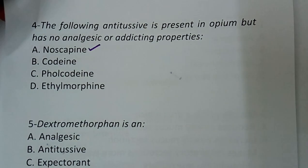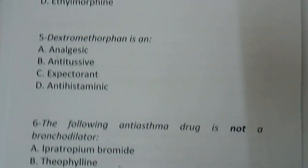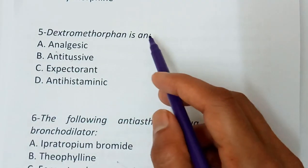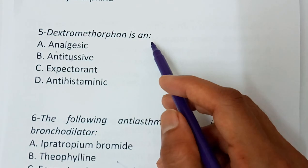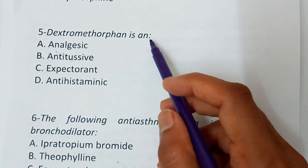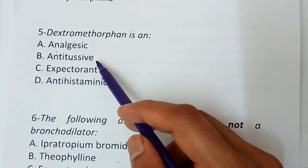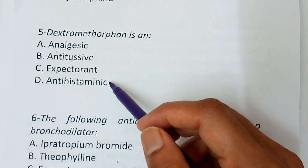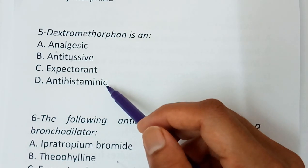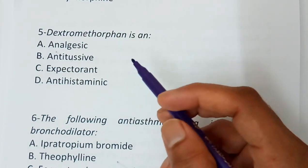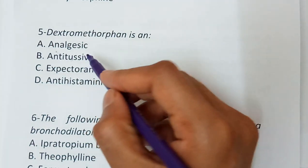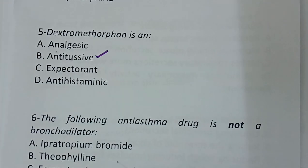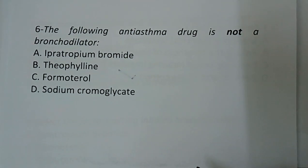Question number five: Dextromethorphan is an — analgesic, antitussive, expectorant, or antihistamine. The correct answer is antitussive.